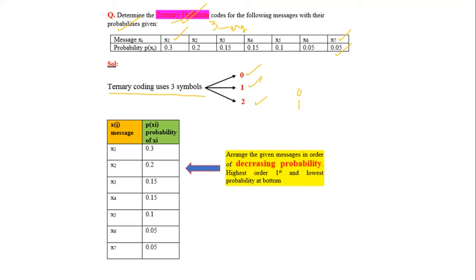The first step in Huffman coding is to arrange the given probabilities in decreasing order. The messages are arranged in the decreasing order of probability. In this example, there is no need to arrange them in any order because the probabilities are already in decreasing order. We reproduce the probabilities as they are.